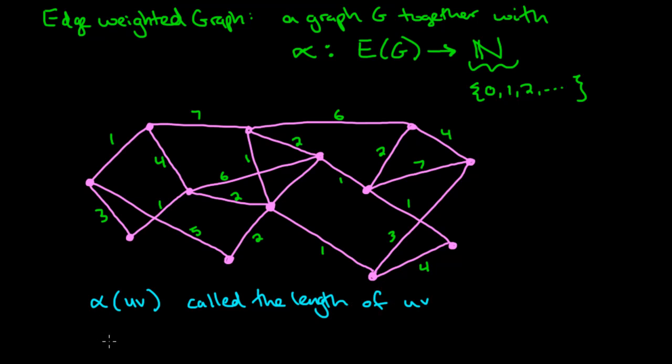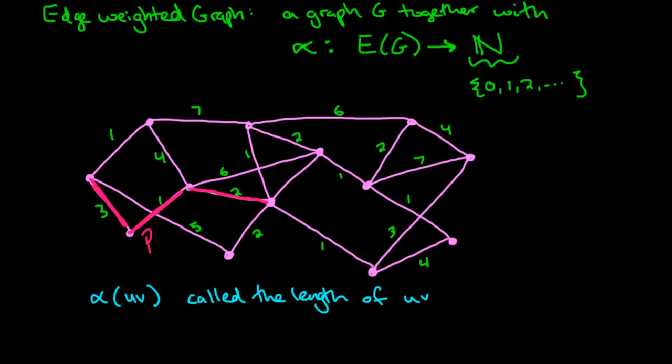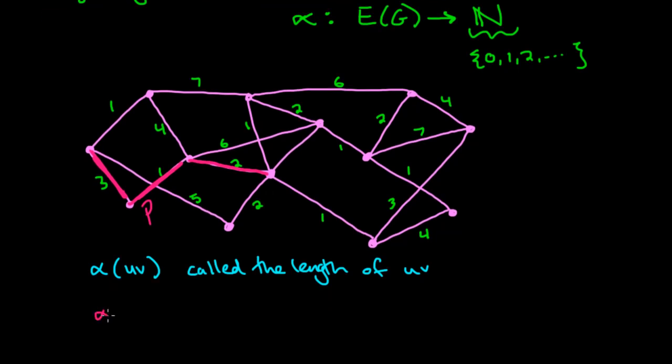And if you look at some kind of a path through this graph, let's take a look, here's a little example, maybe I'll use pink to do this. So we go maybe through starting along here, and then maybe to here. Let's just take a look at this path in bright pink. So this path right here, p I'll call it, in bright pink. We can also talk about the weights of a path where we just sum up the weights of the individual edges.